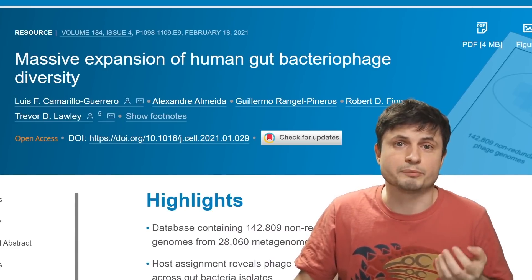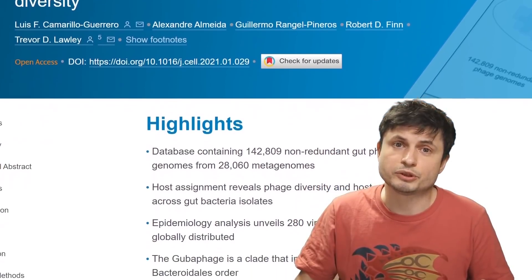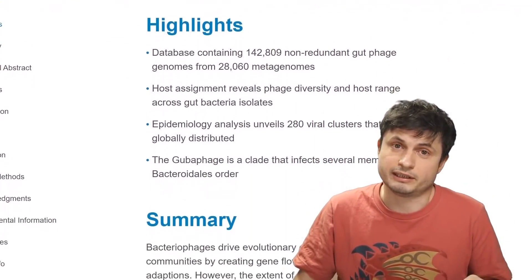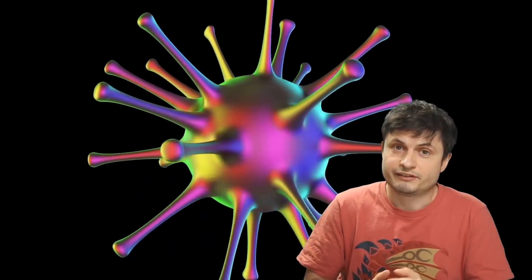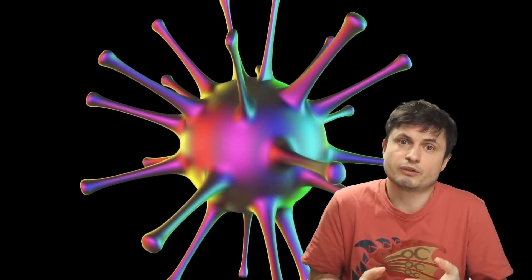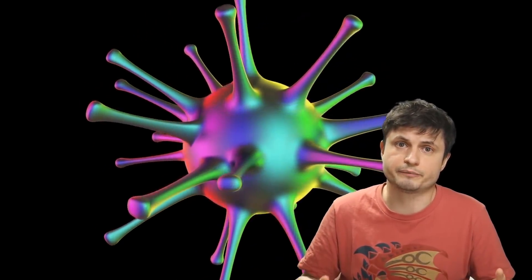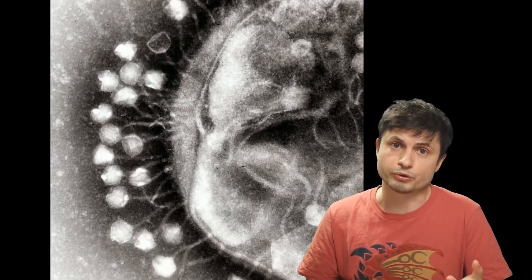But anyway, back to the study that we're going to be talking about. So essentially, this particular study that you can find in the description below discovered that there are at least 140,000 different species of viruses that seem to reside inside our bellies. And more than half of these viruses we've never really seen before anywhere in nature. In other words, the scientists were able to identify another type of microcosm inside the microcosm of our organisms, or basically inside our bellies.